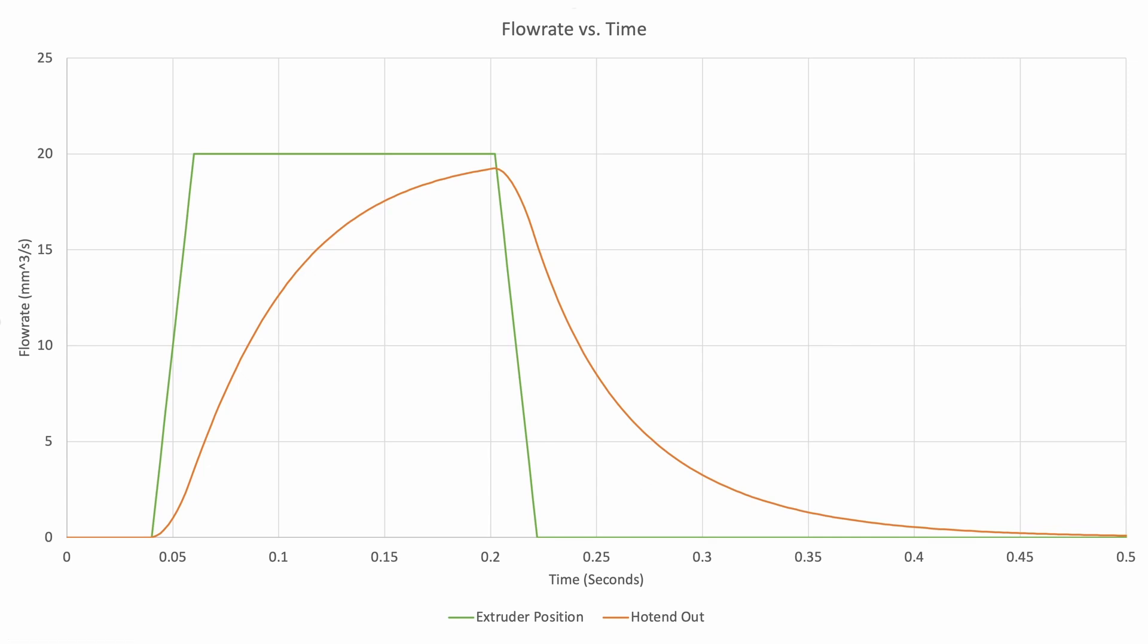If you remember all of the extruder math and calculations we've done with pressure advance and smooth pressure advance, you'll know that we kind of compensate for that, and this blue line is actually what ends up happening using the smooth pressure advance parameters that basically match this case.